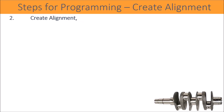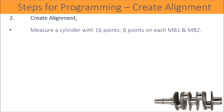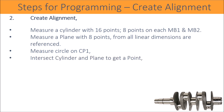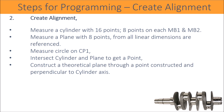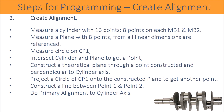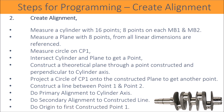To create alignment: Measure a Cylinder with 16 points — 8 points each on MB1 and MB3. Measure a Plane with 8 points from which all linear dimensions are referenced. Measure a Circle on CP1. Intersect the Cylinder and Plane to get a point. Construct a theoretical plane through that point, perpendicular to the cylinder axis. Project the circle of CP1 onto the constructed plane to get another point. Construct a line between point 1 and point 2. Do primary alignment to the cylinder axis, secondary alignment to the constructed line, and set the origin to the first constructed point.